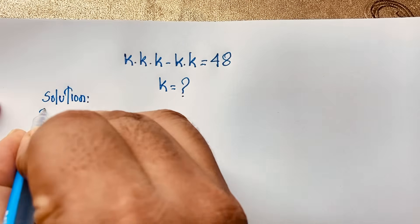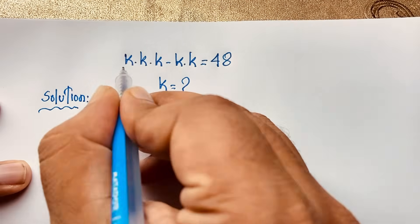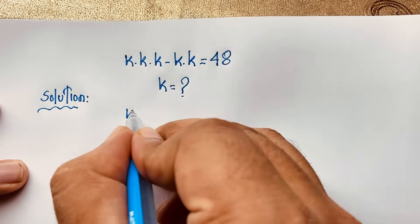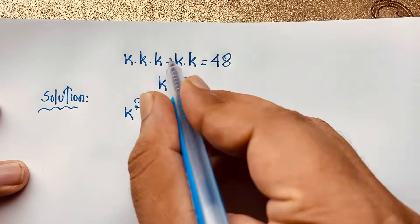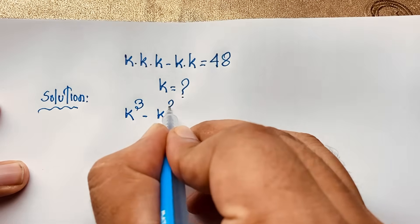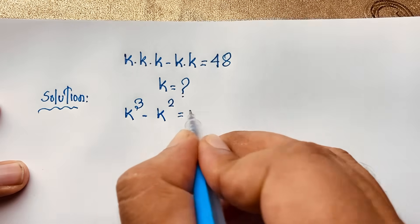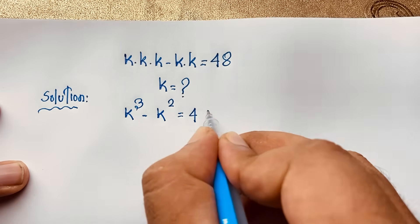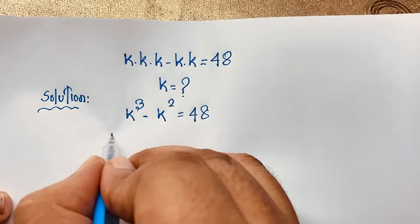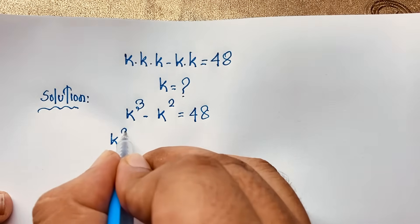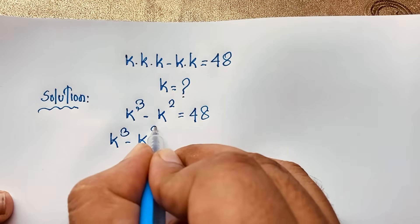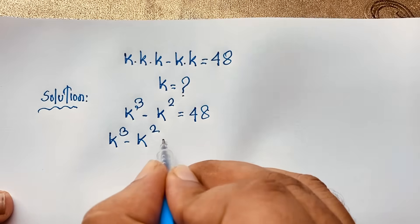This is an easy math problem. Here, k times k times k will be k to the power 3, and k times k will be k to the power 2. So it will be k to the power 3 minus k to the power 2 is equal to 48.